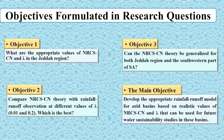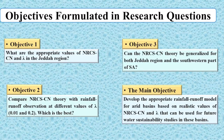Our objectives can be set as three main research questions. The first objective: what are the appropriate values of NRCS CN and lambda in the Jeddah region, since the study area focuses on Jeddah. The second objective is to compare the NRCS CN theory with rainfall-runoff observations at different values of lambda to see which one best fits the data.